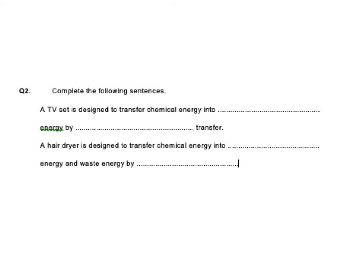So the first one, you've just got to complete these sentences. A TV is designed to transfer chemical energy into thermal energy by electrical transfer. We want other forms of energy as well, we want the radiation, we want the sound and the light, but obviously they're not a store, they're ways of transferring. A hairdryer is designed to transfer chemical energy into thermal energy and waste energy by radiation, which again is the sound that we get, which we don't want. So it's a wasted form.